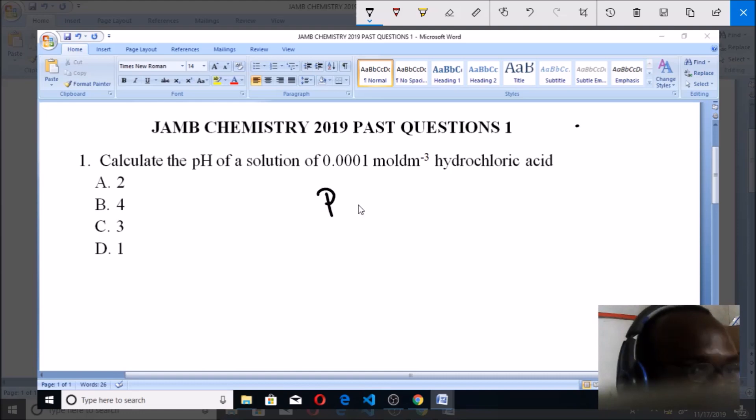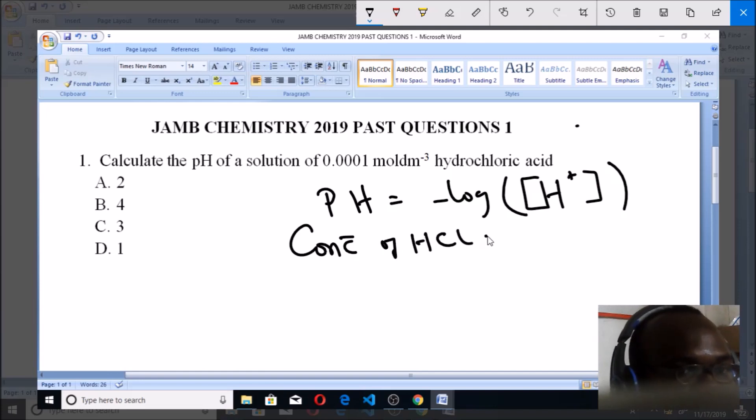pH is simply the negative logarithm of the concentration of the hydrogen ion - you can call it hydronium ion. So that is what pH is. Now what is the concentration of the hydrochloric acid that we have? We have it to be 0.0001. Because we have only one single hydrogen, this concentration is also the concentration of the hydronium ion.